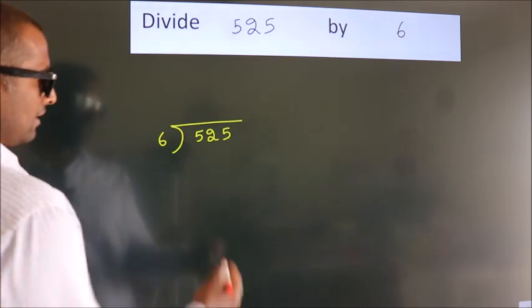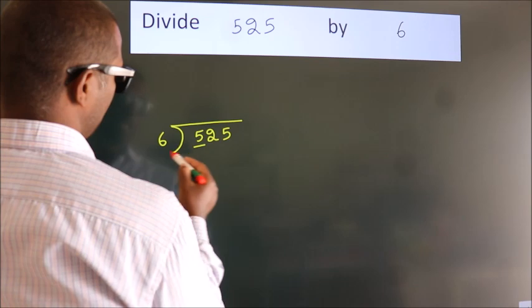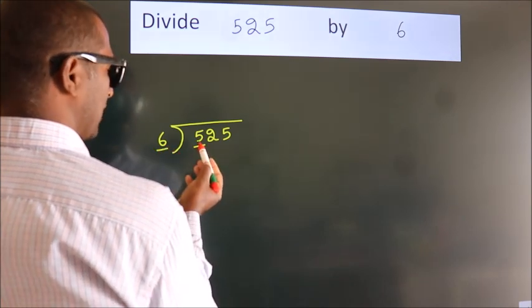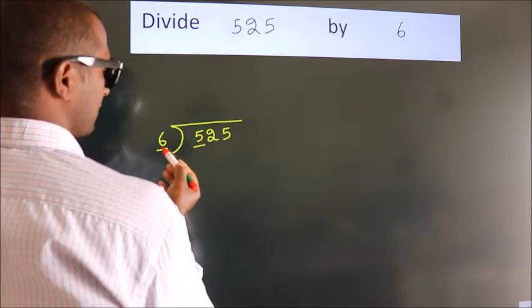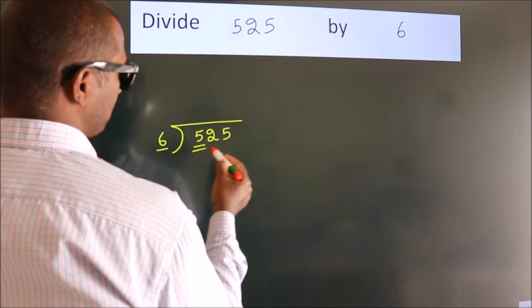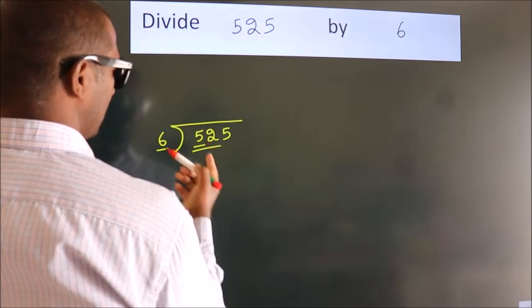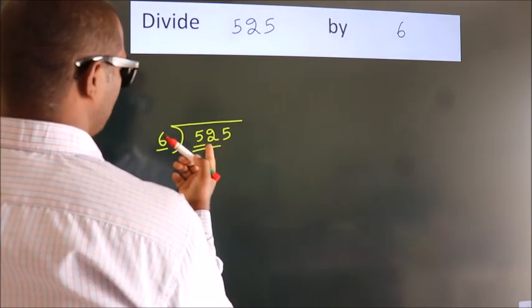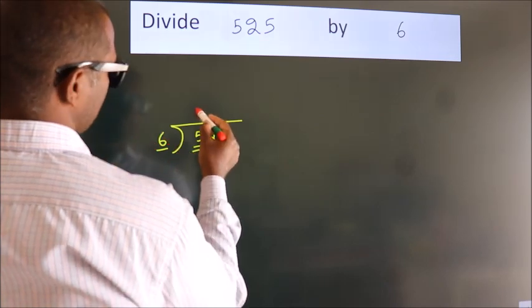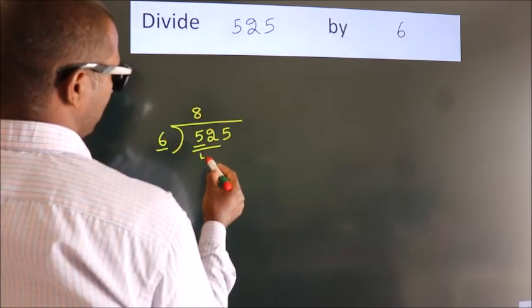Next, here we have 5, here 6. 5 is smaller than 6, so we should take two numbers, 52. A number close to 52 in the 6 table is 6 times 8 equals 48.